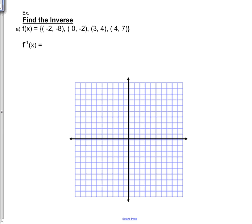Let's find some inverse functions. f of x is the set of four points: (−2, −8), (0, −2), (3, 4), and (4, 7). Let's graph that first in red. The inverse function f⁻¹(x) would be (−8, −2), (−2, 0), (4, 3), and (7, 4).